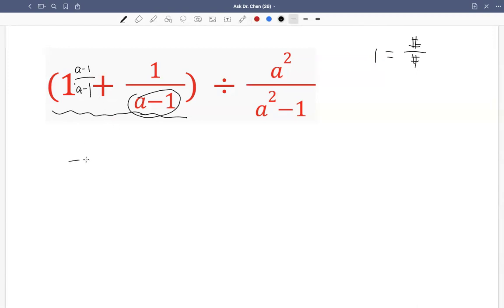Now, once we have a common denominator, which is a minus 1, then we perform the operation, which is a plus in this case, in terms of the numerator.